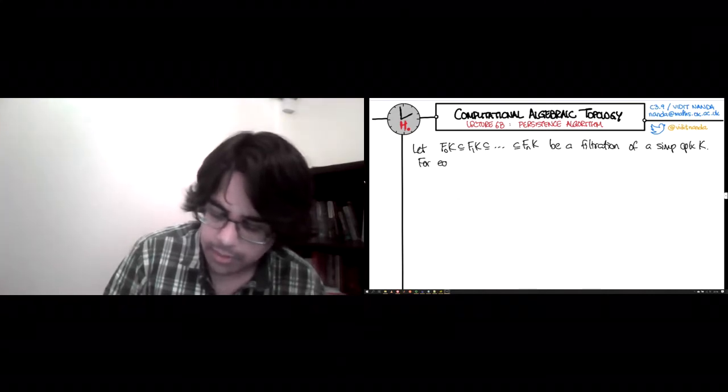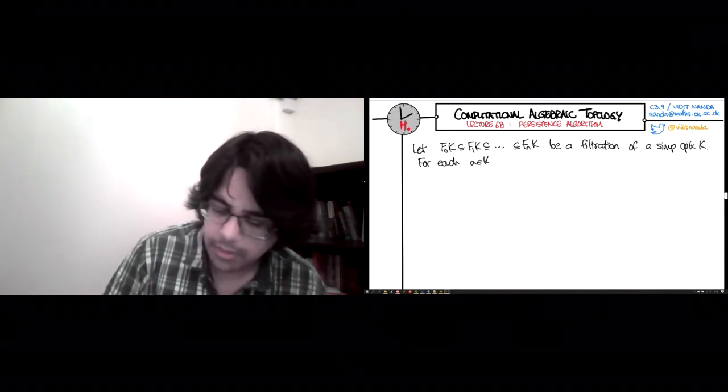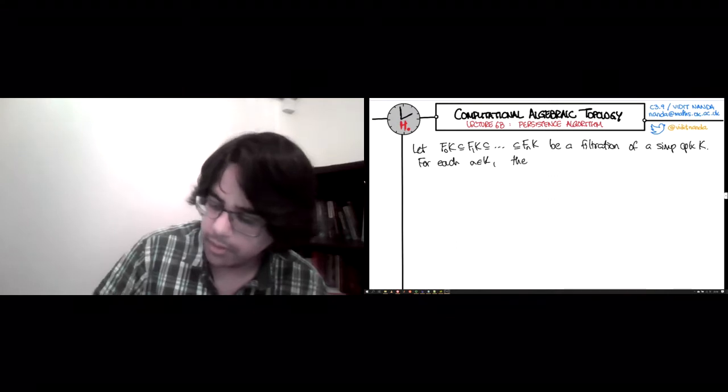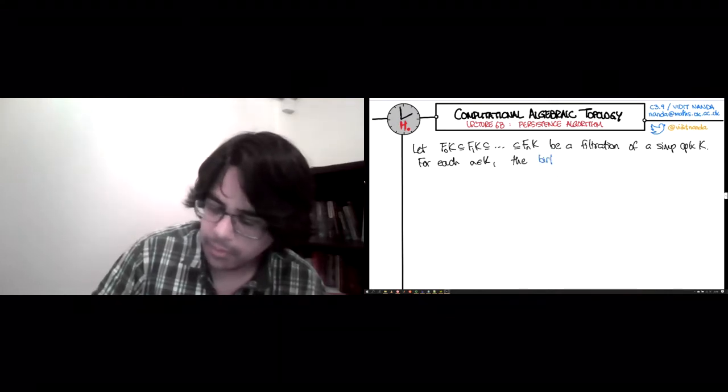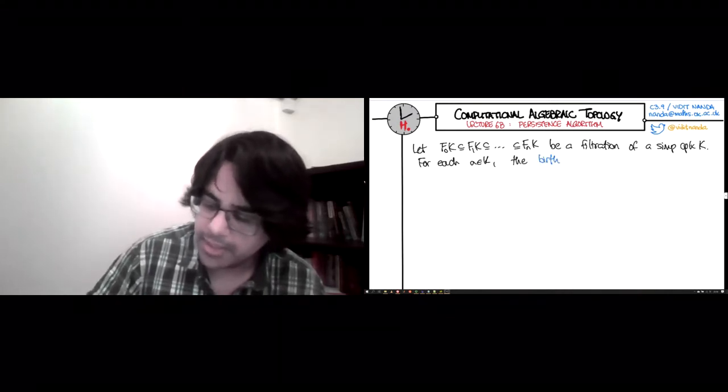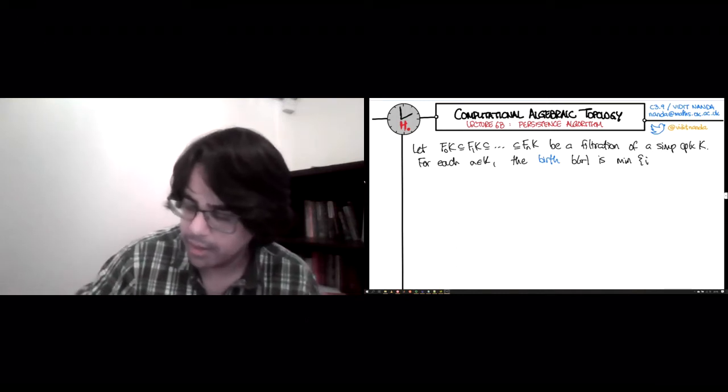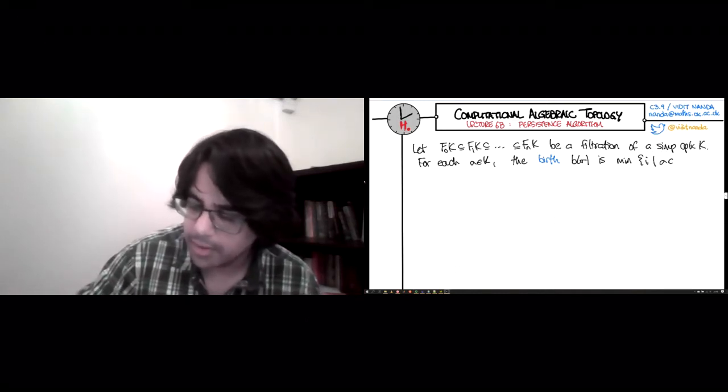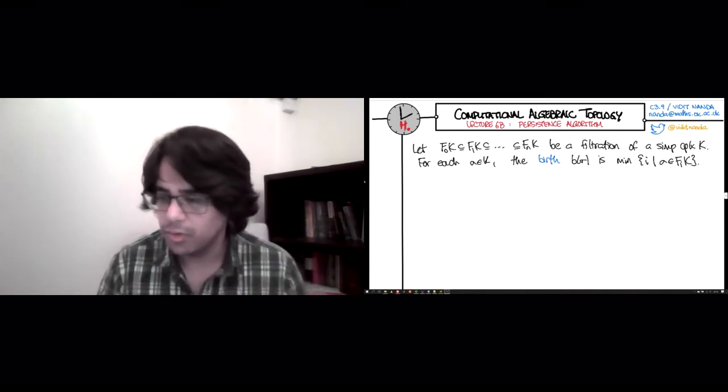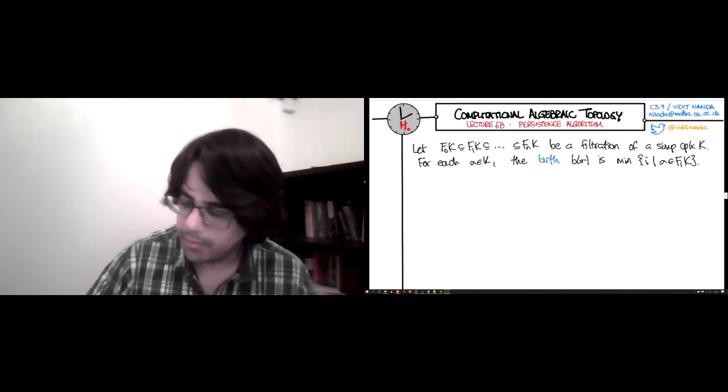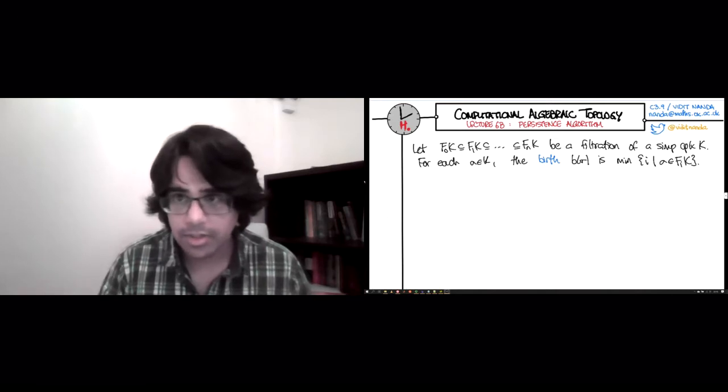For each simplex sigma, the birth, let's call it B sigma, is the minimum over all i going from 0 to n, so that sigma is in f_i K. So this is just for bookkeeping. And so now let's begin to describe our algorithm.